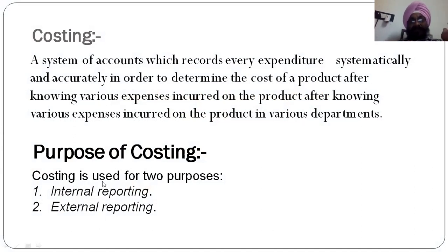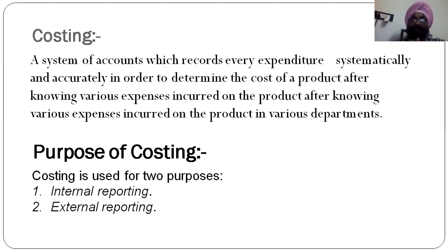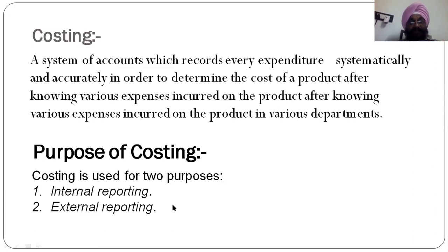The second concept is costing. Costing is a system of accounts which records every expenditure systematically and accurately in order to determine the cost of a product, after knowing various expenses incurred in various departments. The purposes of costing are two: internal reporting — telling us what comes out of our estimates — and external reporting to entities such as the government, declaring profit or performance figures.